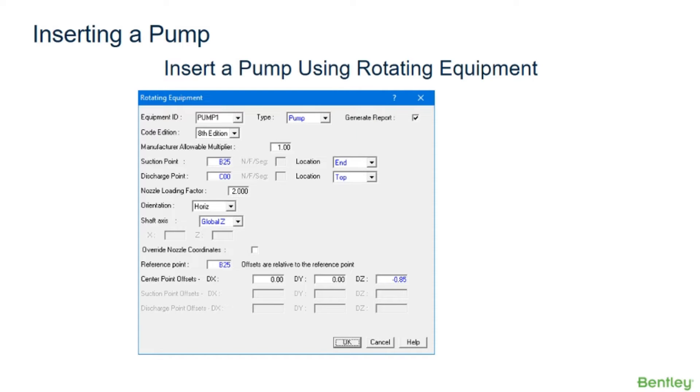To define rotating equipment in the model, you can select the Tools Rotating Equipment option. The Equipment command enables the user to define rotating equipment and to evaluate the forces at the nozzle and reference points using API 610, API 617, and NEMA standards.